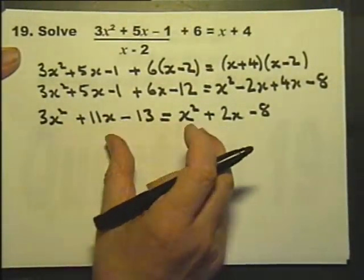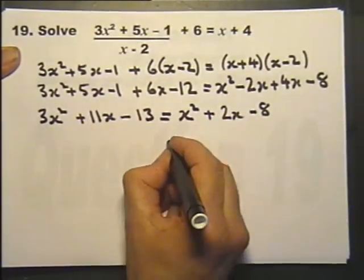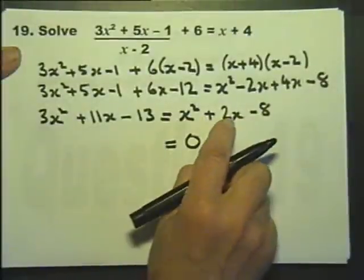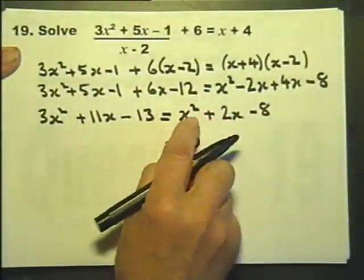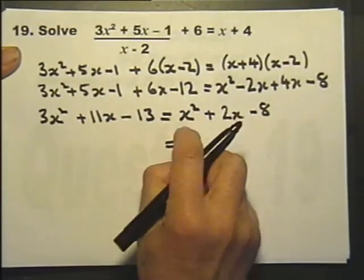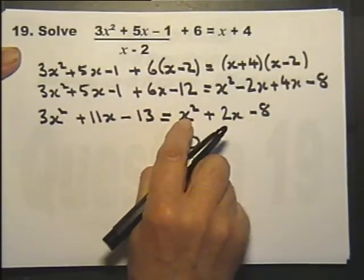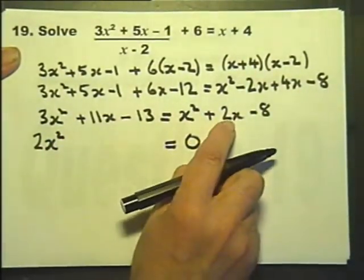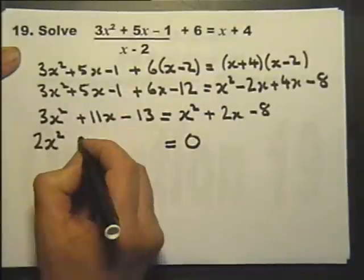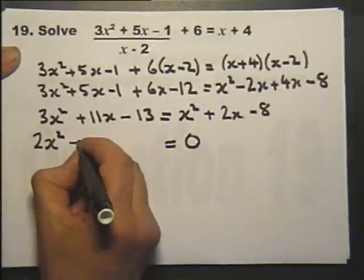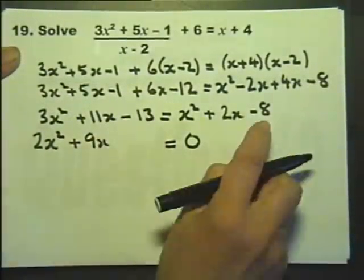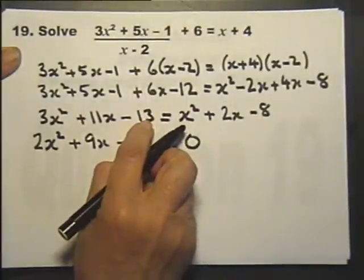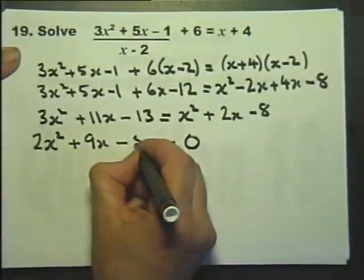Now I'll consider making it what we call a zero equation by subtracting each of these terms. Subtracting that one, subtracting that one, and adding that one to both sides. So if I subtract that one from both sides I will get that. Subtract that from both sides — so 2x away from the 11. Adding the 8 to both sides: that, add on 8, is minus 5.